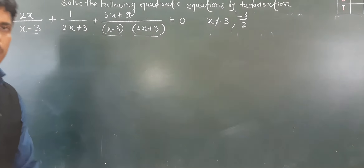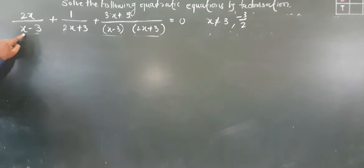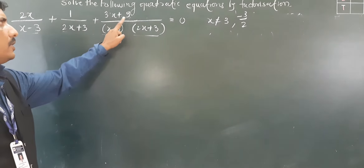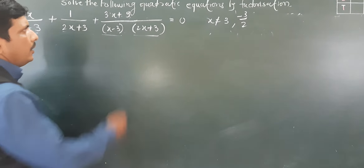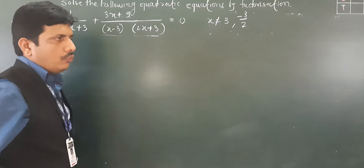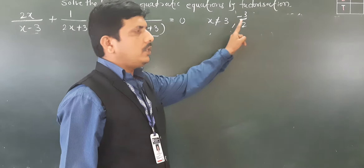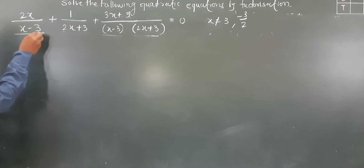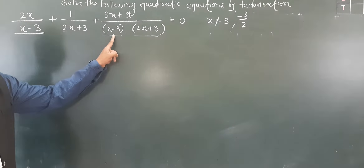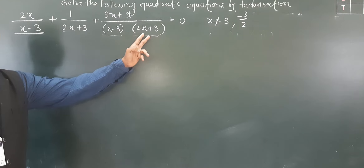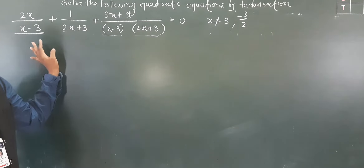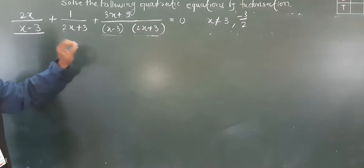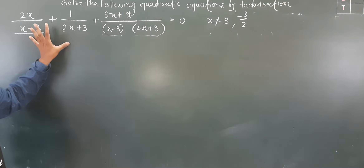Now we look at one more example: 2x/(x−3) + 1/(2x+3) + (3x+9)/((x−3)(2x+3)) = 0, where x is not equal to 3 and x is not equal to minus 3/2. Here we notice that the denominator of the first fraction is (x−3), and the third fraction already has (x−3)(2x+3) in the denominator. We will make all denominators the same.